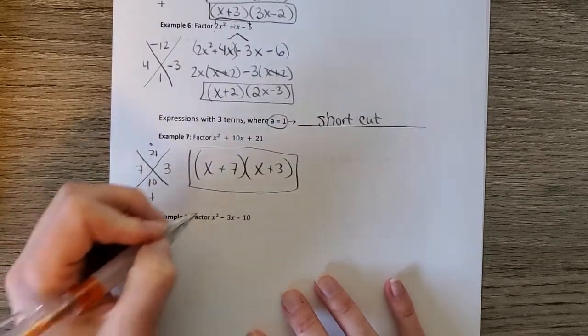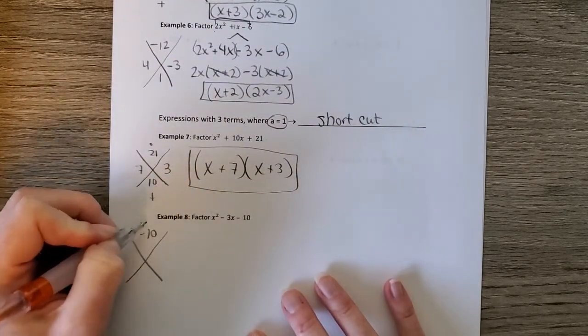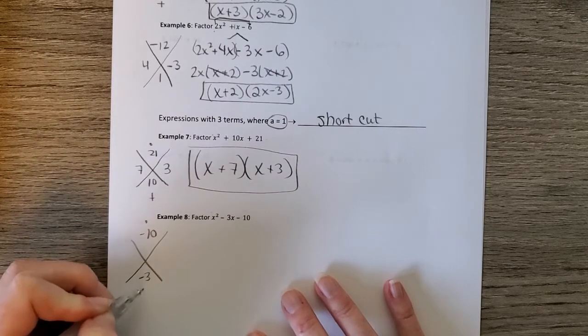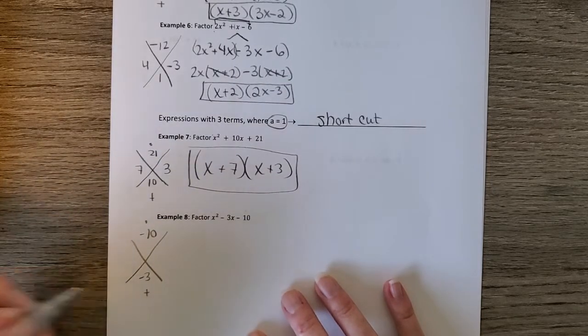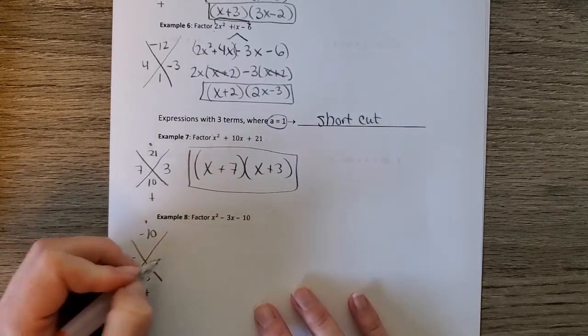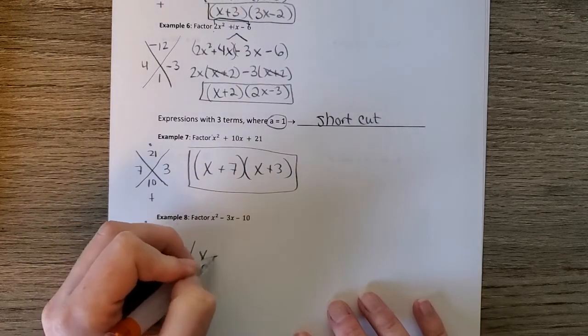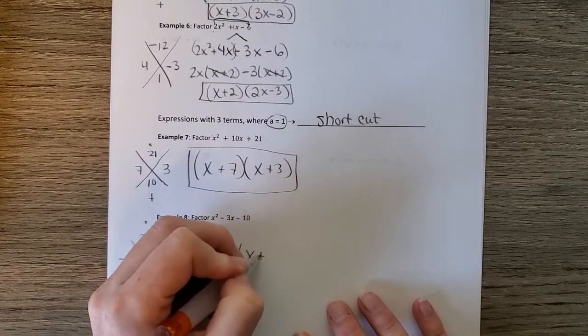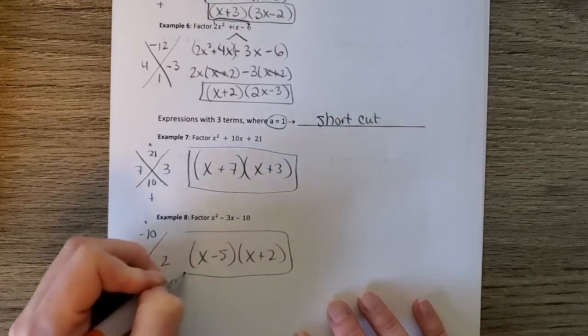And then the last one. 1 times negative 10 is negative 10. And the middle is negative 3. What multiplies to negative 10 and adds to negative 3? Negative 5 and positive 2. So we have x minus 5, x plus 2. And we have the answer.